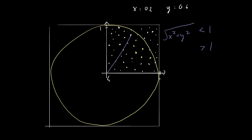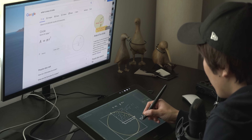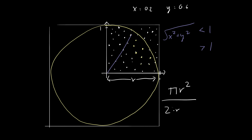And then now it's just basic algebra, right? We all know that the area of a circle is π r squared. And then in this case, the area of a square would be two times r, squared. And then this ratio is going to be the same as the ratio of the number of points in the circle — num_points_circle divided by the number of total points.